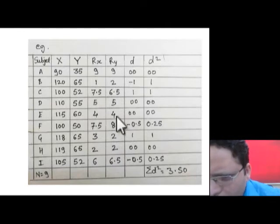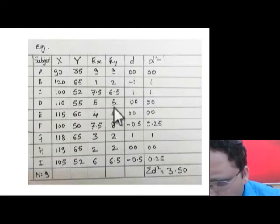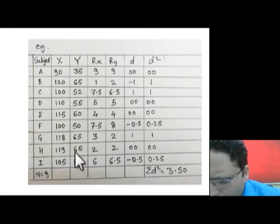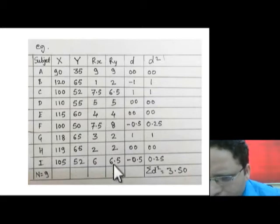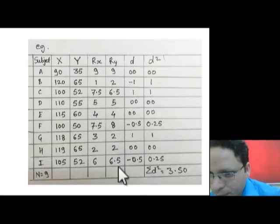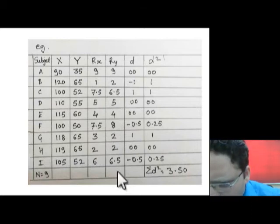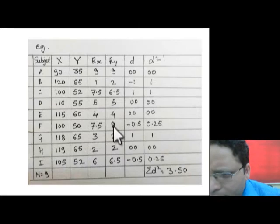Next, 55 gets rank 5. After that, 52 appears twice, which would be ranks 6 and 7. So we calculate (6 + 7) / 2 = 13 / 2 = 6.5, and write 6.5 for both entries. After 52, the value 50 gets rank 8, and then 35 gets rank 9. This is how we complete the Ry column.